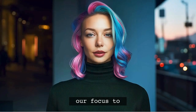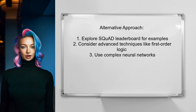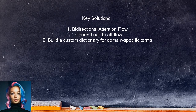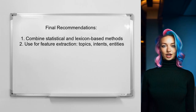An alternative approach for identifying user intent in NLP is to explore advanced techniques. One user suggests checking out the SQuAD leaderboard for examples of question and answering systems. They mention that complex domains may require first-order logic and neural networks, and highlight a notable solution called bi-directional attention flow, which can enhance understanding of context. Additionally, if your data includes domain-specific terms, creating a custom dictionary is essential. The user also emphasizes that relying solely on statistical methods like cosine distance may not be sufficient — combining statistical and lexicon-based approaches is often necessary for effective feature extraction.